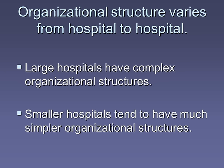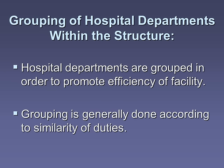Organizational structure varies from hospital to hospital. Large hospitals will have a more complex organizational structure due to the number of employees. Smaller hospitals tend to have a much smaller organizational structure simply because of the number of employees. Hospital departments are grouped in order to promote efficiency of the facility, and grouping is generally done according to the similarity of duties.